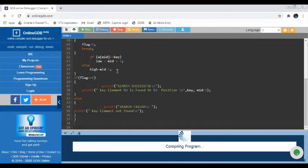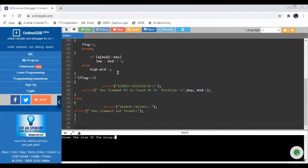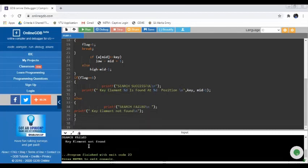For example, suppose if I run the program once again and I give again 5 and the elements will be 2, 4, 6, 8, and 10. And suppose the search element that I will give as 12. So it is saying that the search is failed because the key element is not found. This is how the binary search will search the elements in the array. Thank you.